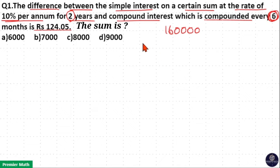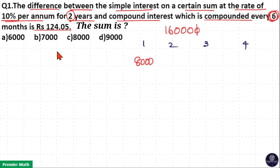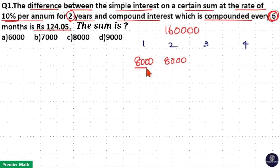There are total 4 terms, that is four 6-month periods. For the first 6-month term, interest is 5% of 1,60,000. Since 10% is 16,000, then 5% is 8,000 — so 8,000 is added in the first term. For the second term, 5% of 1,60,000 is again 8,000. Compound interest means interest on interest, so 5% of the first term's interest of 8,000 is also added. Since 10% of 8,000 is 800, then 5% is 400, added for the second term.